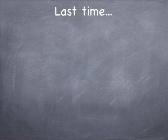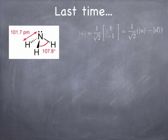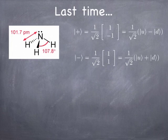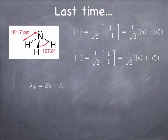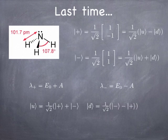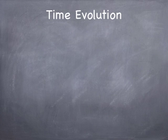Let's continue with our discussion from last time on the ammonia molecule. We discovered that the Hamiltonian of the ammonia molecule has two eigenvectors: the high-energy eigenvector called plus, and the low-energy eigenvector called minus. The eigenvalues are lambda-plus = E0 + A and lambda-minus = E0 − A. If you add plus and minus together you get something like U, so you can rewrite U as a superposition of plus and minus, and similarly D as a superposition of plus and minus. The up and down states are superposition states of energy eigenstates. The question then is: how do I compute time evolution?